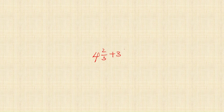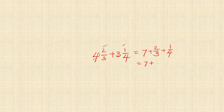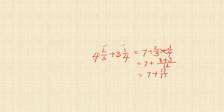Consider 4 and 2 upon 3 plus 3 and 1 upon 4. Add the whole number parts: 4 plus 3 is 7. Then add the proper fractions: 2 upon 3 plus 1 upon 4. LCM is 12. Cross-products: 2 into 4 is 8, plus 3 into 1 is 3, giving 11 upon 12. The result is 7 and 11 upon 12.